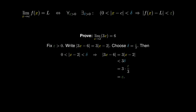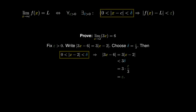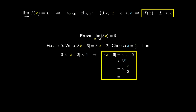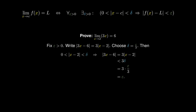This is a valid proof, since for any epsilon, we have found a delta in terms of this epsilon, such that if the absolute value of x minus 2 is smaller than delta, then the absolute value of 3x minus 6 is smaller than epsilon. This establishes the limit that we wanted to prove using the epsilon-delta definition.